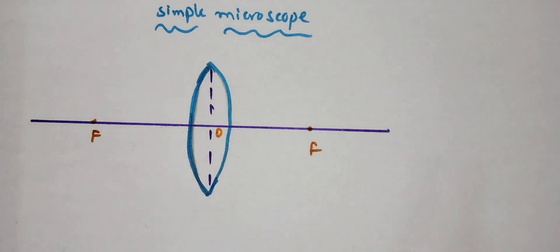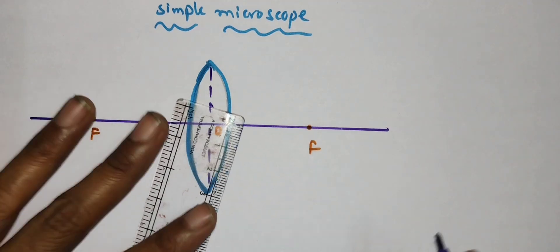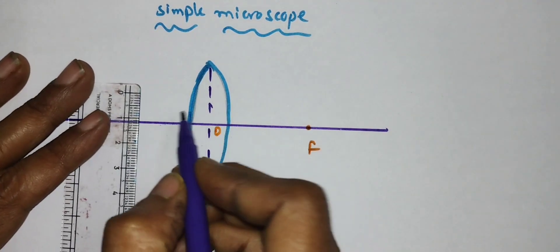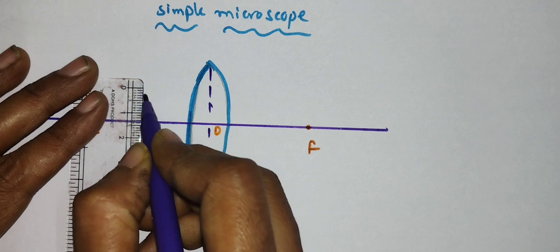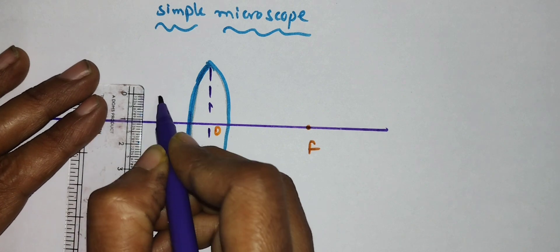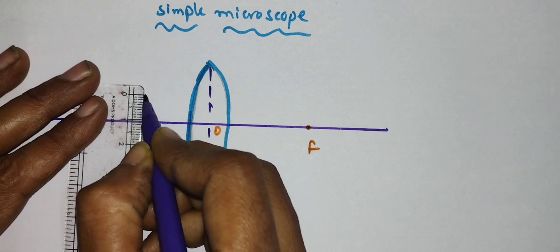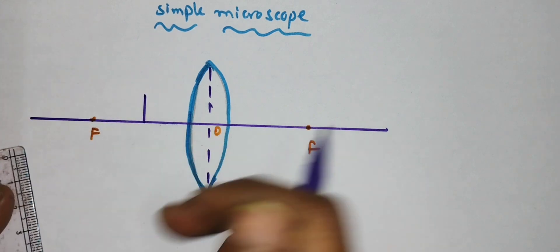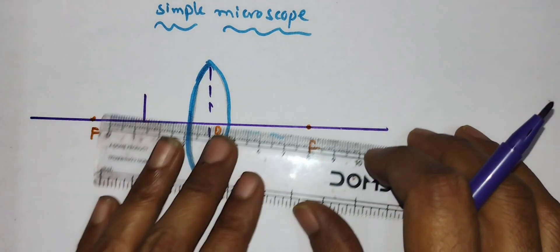Hello everyone. For a simple microscope, the object should be placed in between the optical center and the focus. Here, the object has been placed accordingly.